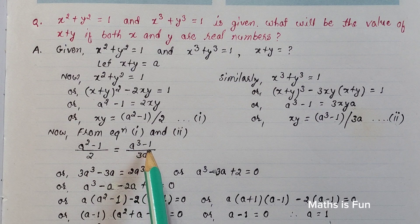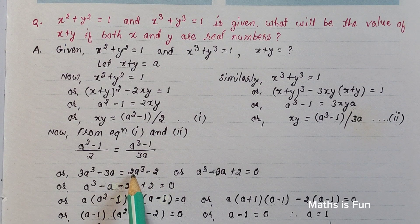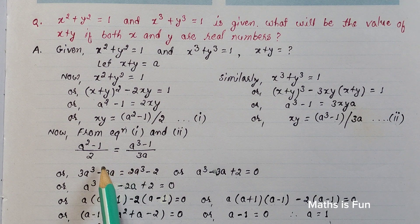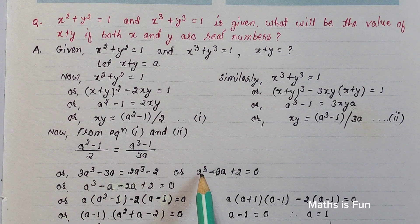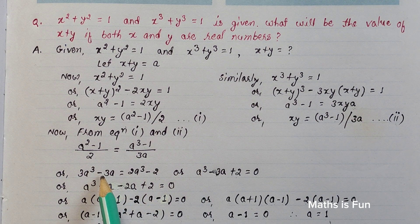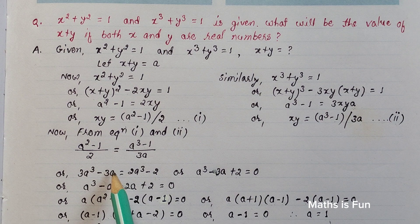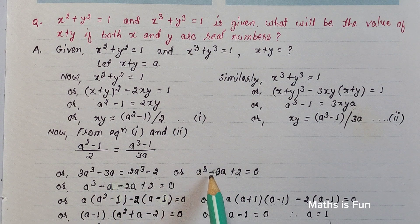We have 3a³ - 3a = 2a³ - 2. Moving 2a³ to the left: 3a³ - 2a³ = a³. Then -2 comes to the left as +2. So our equation becomes a³ - 3a + 2 = 0.